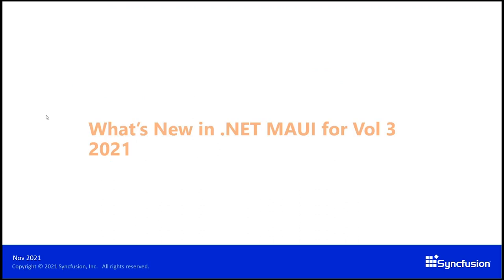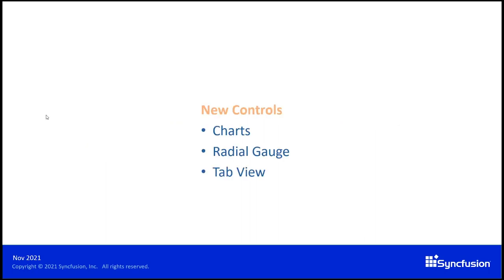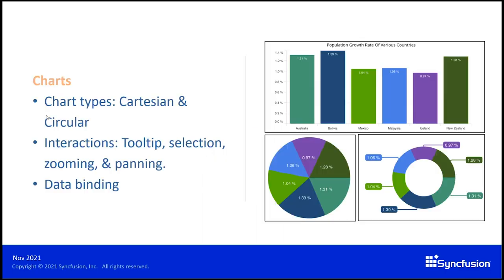Now we shall see the new updates in the .NET MAUI platform. This is the first release for Syncfusion to introduce new controls in the .NET MAUI platform. In this release, we have introduced new controls such as chart, radial gauge, and tab view. For this initial release, we have provided both Cartesian and circular chart types. For interaction, we have provided tooltips, selection, zooming, and panning features. The chart also supports data binding with different data types.